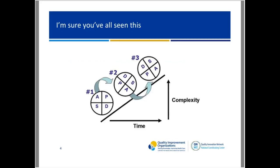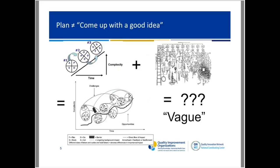A lot of times people think the plan is to come up with a great idea and test it. If the world were this simple, that would be easy. Unfortunately, what tends to happen is you have this theoretically simple model that interacts with your work culture or the culture of the problem you're trying to solve. And when this meets that, you get something not so pretty. Vague solutions to a vague problem get you vague results. Things are the way they are because they got that way.